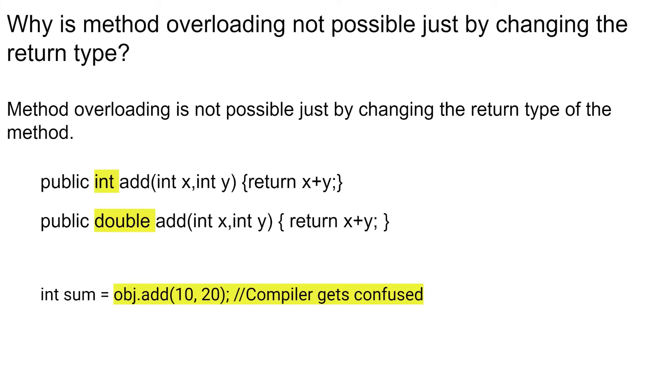Yes. Method overloading is not possible just by changing the return type of the method because of ambiguity. Let's have a look at the example here. We have two methods. One is add integer x comma y, and below that we have add integer x comma y, but the first one returns int and the second one returns double. But the main problem is here. When I try to call add method, I do object dot add and I pass two parameters, which is 10 comma 20 here. The compiler is not able to understand if I am calling the first method that returns int or the second method that returns double. That is the reason compiler gets confused. And due to ambiguity, compiler comes up with the error that ambiguous method call. That is the reason we cannot do method overloading just by changing the return type of the method.